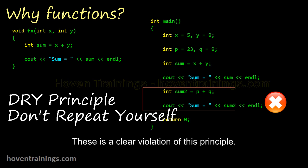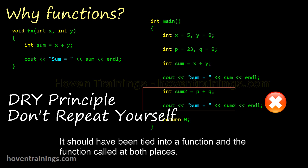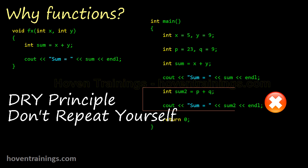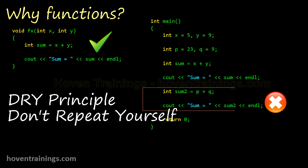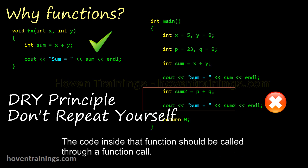This is a clear violation of this principle. The above code is being repeated here. It should have been tied into a function and the function called at both places. Whenever you find that a code is being repeated the second time, write a function. The code inside that function should be called through a function call.